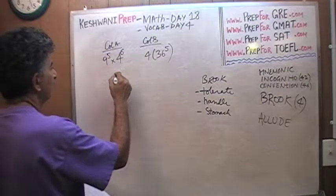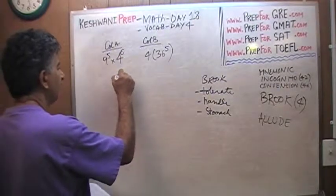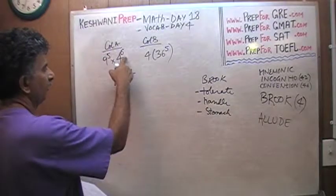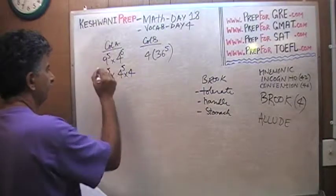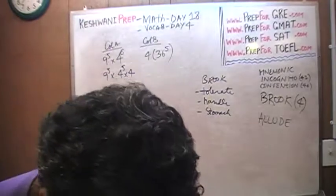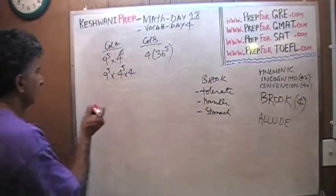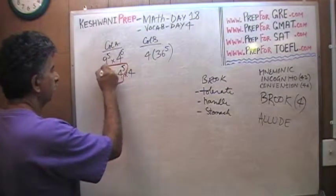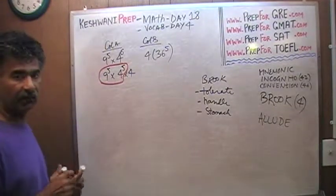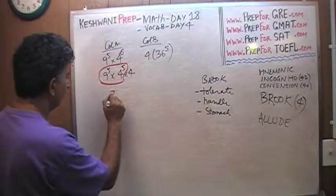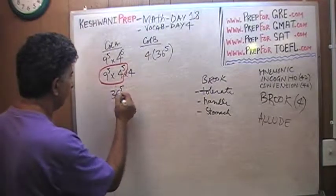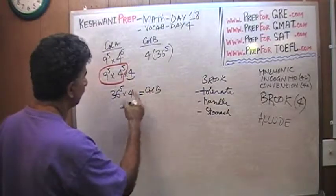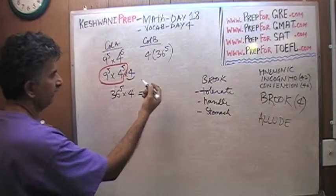4 raised to 6 can be written as 4 raised to 5 times 4, because 4 raised to 5 times 4 is the same as 4 raised to 6. Now we have 9 raised to 5 and 4 raised to 5, which can be written as 36 raised to 5, times 4. Voilà — that's your Column B. We started with Column A and ended up with Column B. The answer is C.